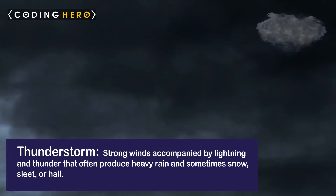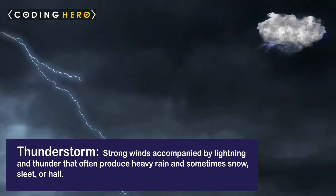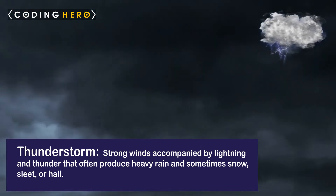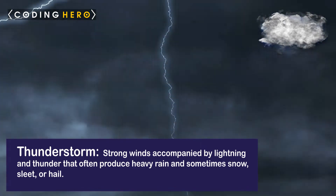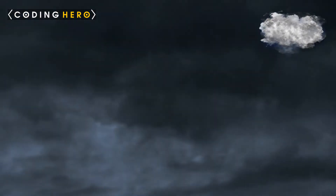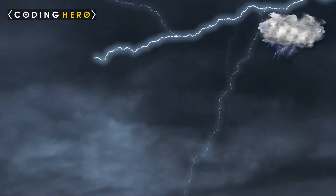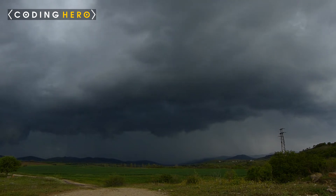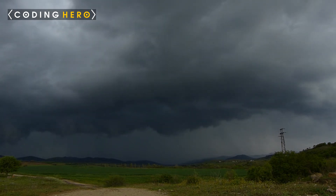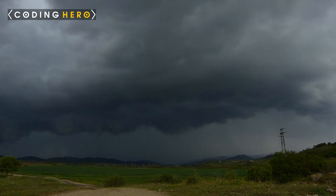Thunderstorm. A thunderstorm, also known as an electrical storm or a lightning storm, is a storm categorized by the presence of lightning and its acoustic effect on the earth's atmosphere known as thunder. They are usually accompanied by strong winds and often produce heavy rain and sometimes snow, sleet or hail.